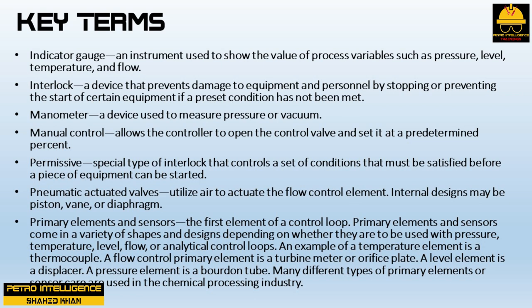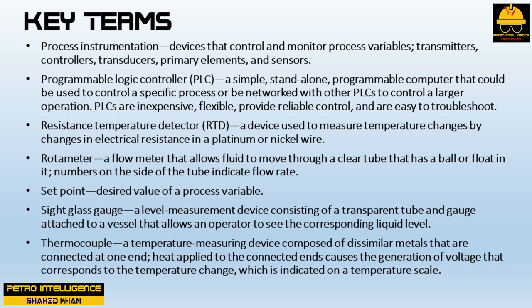Pneumatic actuated valves utilize air to actuate the flow control element; internal designs may be piston, vane, or diaphragm. Primary elements and sensors are the first element of a control loop and come in a variety of shapes and designs depending on whether they are used with pressure, temperature, level, flow, or analytical control loops. An example of a temperature element is a thermocouple; a flow control primary element is a turbine meter or orifice plate; a level element is a displacer; a pressure element is a Bourdon tube.